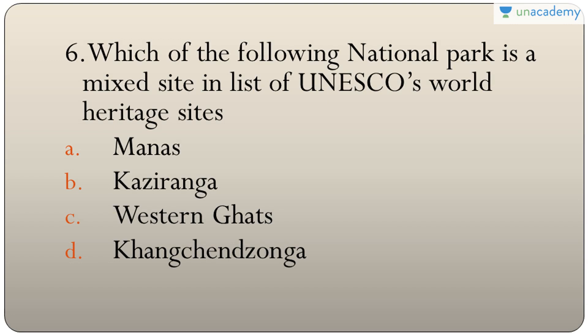Question six: which national park is a mixed site in UNESCO's World Heritage list? The answer is D — Kanchenjunga. It is the only mixed site in India on the UNESCO World Heritage list, satisfying conditions of both natural and cultural sites.